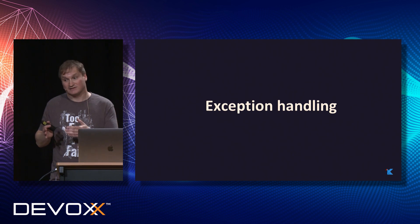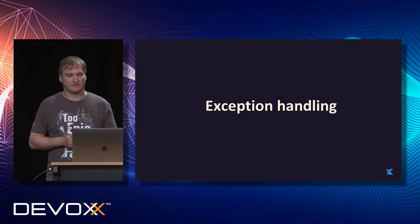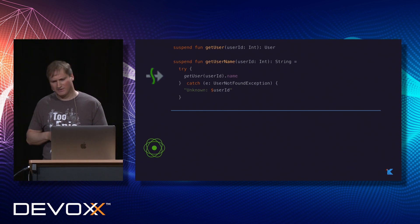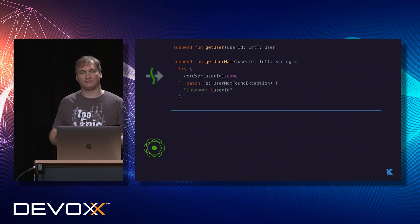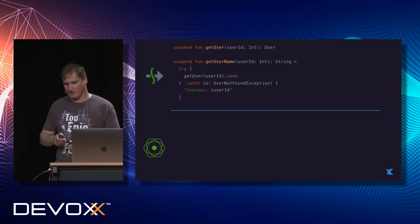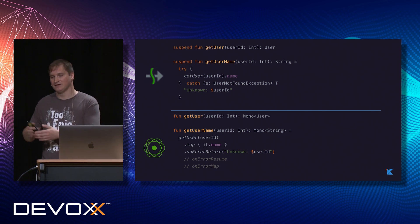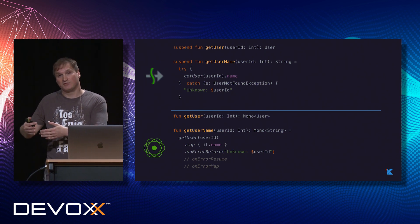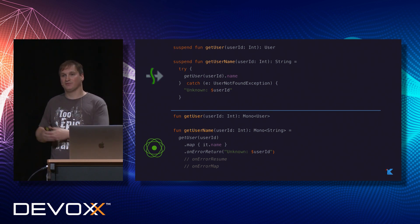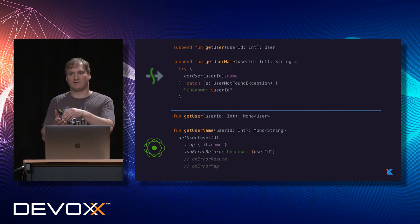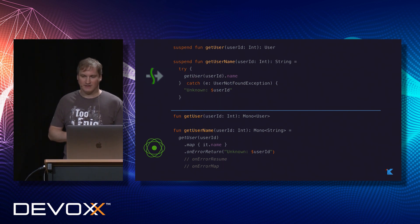So far we've only talked about happy-path scenarios, but we also need to handle exceptions. With coroutines, we don't have to do anything special — we write regular code with our asynchronous functions and use try-catch as before. With Project Reactor, we have to use operators. For example, onErrorReturn provides a default value to return when an exception occurs in your pipeline. There are other operators for more dynamic value production, but you must learn them all and use this functional style.